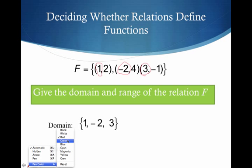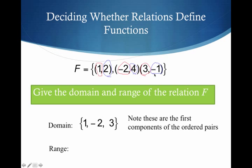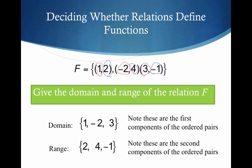All right, let's see here. What's going to be our range? Well, we have a 2, a 4, and a negative 1 as our second components. And so I have 2, 4, and negative 1 as I've circled in blue as my second components.